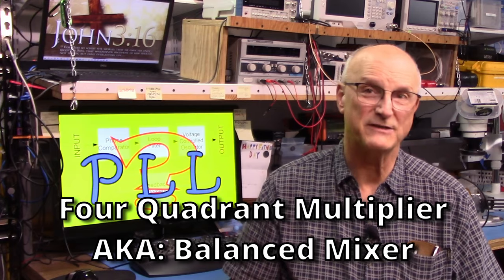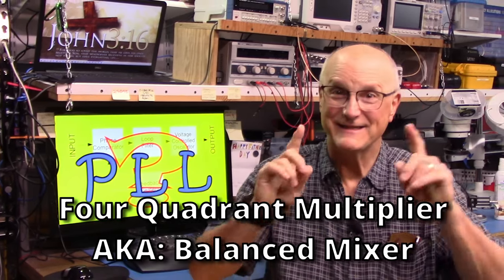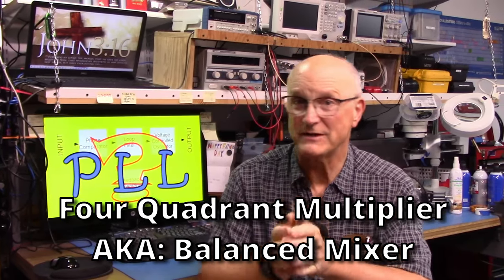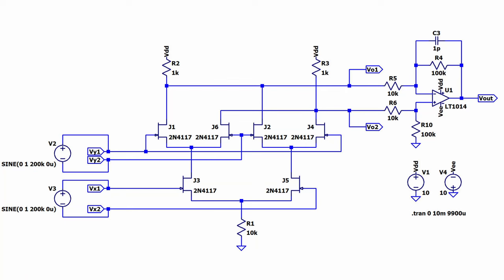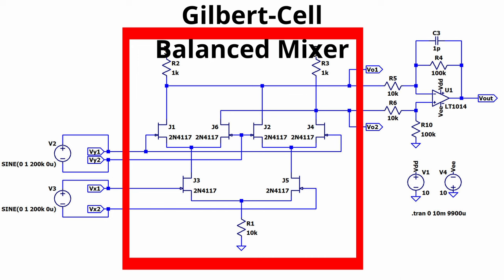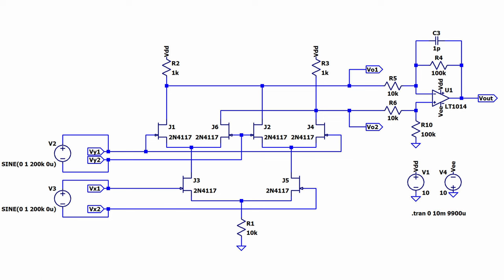And the first is a four quadrant multiplier, otherwise known as a balanced mixer. Yup, you got it. It is the exact same thing that is used to create and to demodulate double sideband suppressed carrier signals. This is intended for two sinusoidal signals. I am not going to go into all the math as to why this works. I will show you this simulation to demonstrate that it does indeed work. Here we have what is known as a Gilbert Cell balanced mixer, which is the type most often found in the integrated circuits which sport balanced mixers.